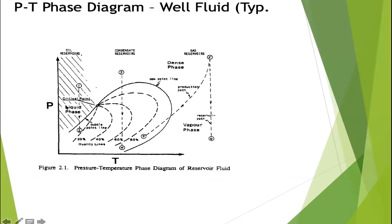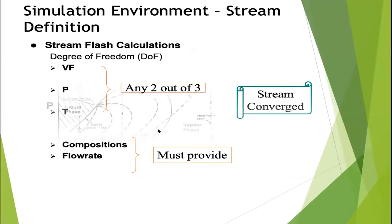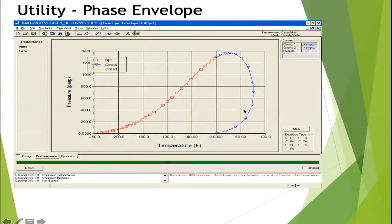The dense phase and critical point region is difficult to analyze. In the two-phase, liquid, or vapor regions it is easier to analyze properties. HYSYS generates a PT phase diagram where red squares show the bubble point and blue triangles show the dew point curve. The region between them is the two-phase region; beyond the red lines is liquid phase, and beyond the blue line is vapor phase.